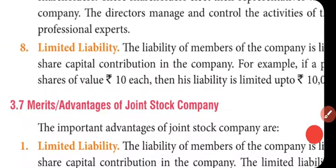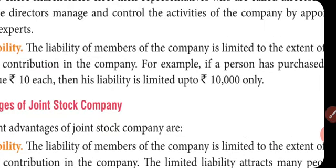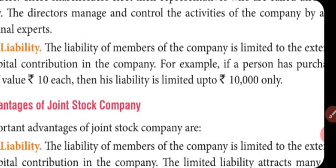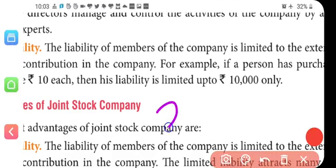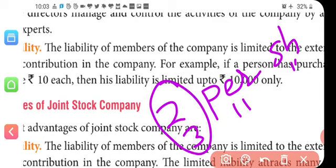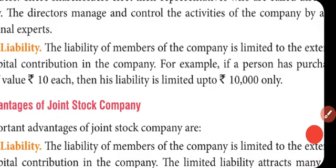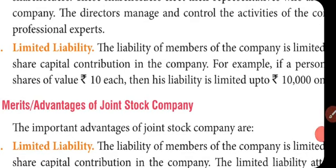For example, if a person has purchased 1,000 shares of value Rs. 10 each, his liability is limited to Rs. 10,000 only. Suppose he applied for those shares and paid Rs. 2 per share on application, then Rs. 3 per share on allotment — totalling Rs. 5 paid — with Rs. 5 per share still due. The company cannot call more than Rs. 5,000 from him in total.